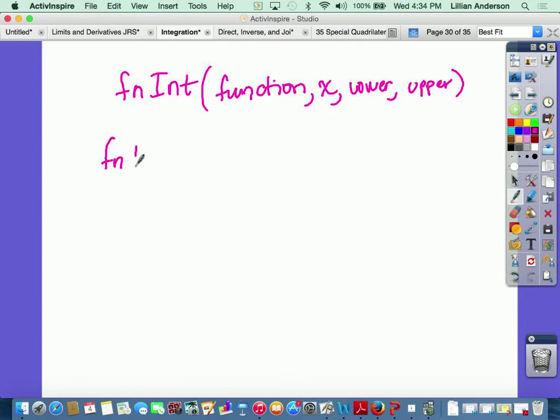So for the very first example, when you went to math 9, you would have had to type in 2 minus absolute value of x, the same way we get the absolute value, math, go over the number, that's how you get it, comma.